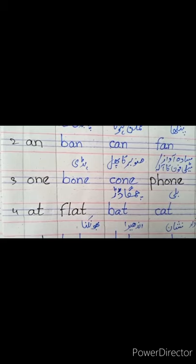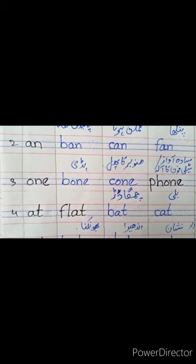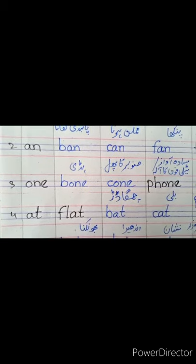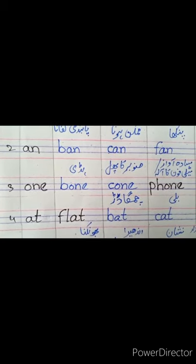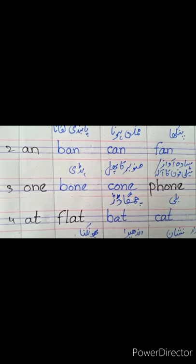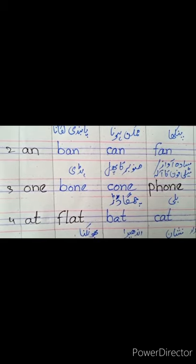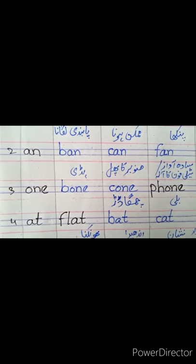Third group — ہم نے ایسے words لکھنے ہیں جو O, N, E پہ ختم ہوتے ہیں. So first one is 'bone'. Bone means ہڈی — B, O, N, E.